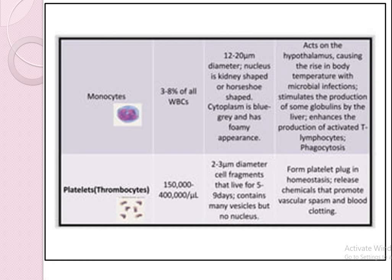Monocytes make up 3 to 8 percent of all WBCs. The size of monocytes is 12 to 20 micrometers in diameter. Their nucleus is kidney-shaped and they act on the hypothalamus to help maintain body temperature.